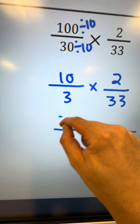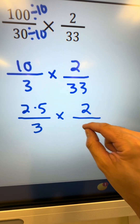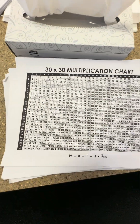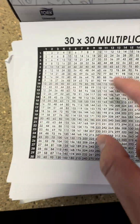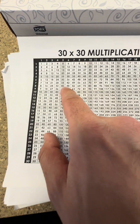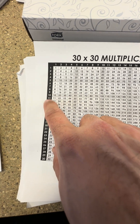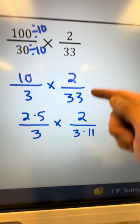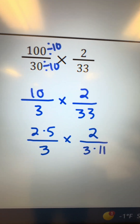So 10 is 2 times 5; 3 stays as 3; 2 stays as 2; and 33 is 3 times 11. As a side note, if you don't know your multiplication facts, just use a multiplication table. I'm using a 30 by 30 here — look for your number, scan each row for 33, and once you find it you'll know the factors. In this case, 33 is 11 times 3. That's how you find factors if you're not confident with your multiplication facts.